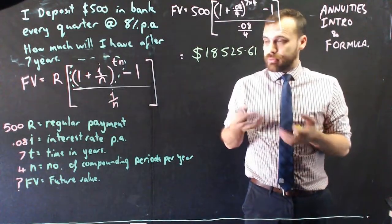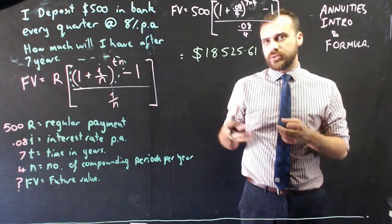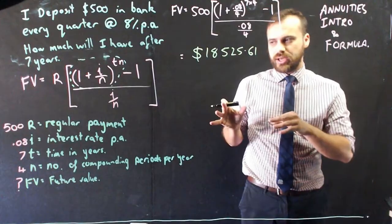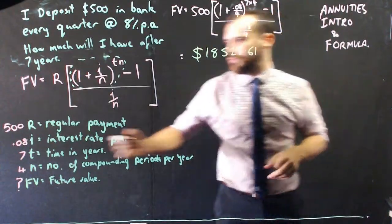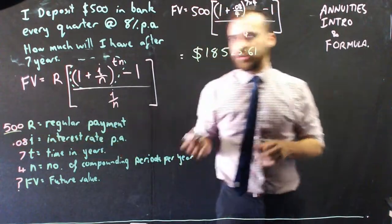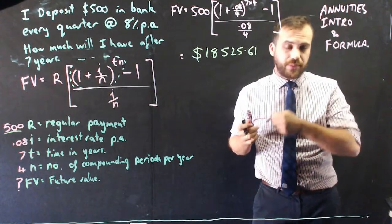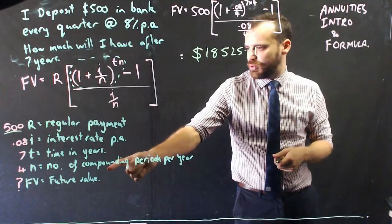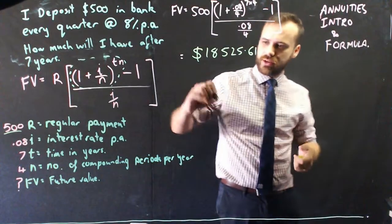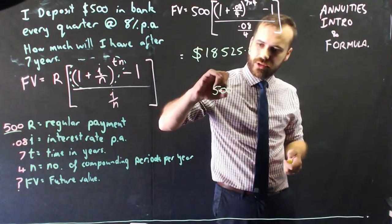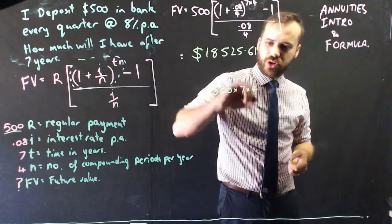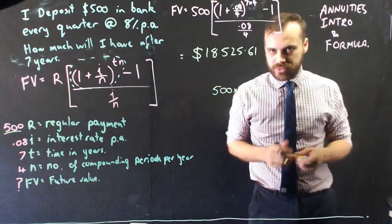Now, I think that's right, but I'm not really sure. So one way to do it is to take compound interest out of the equation altogether, and just ask yourself, if I made $500 payments just into a piggy bank, so it's not paying compound interest, and it's 7 years and it was 4 times a year.